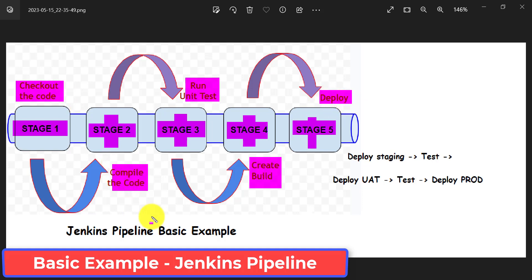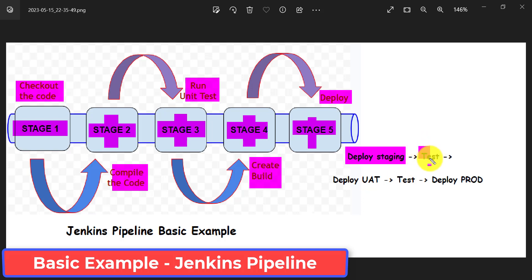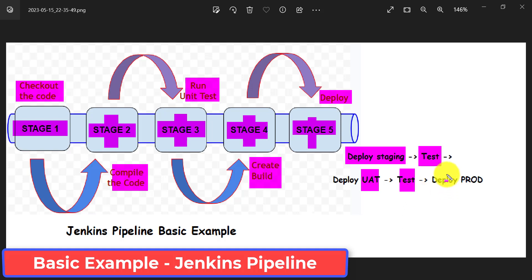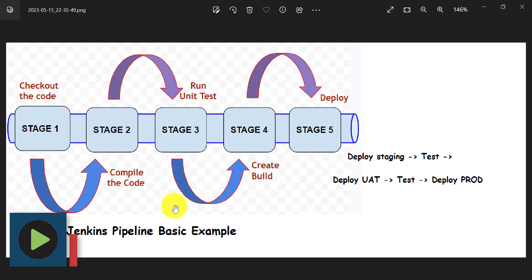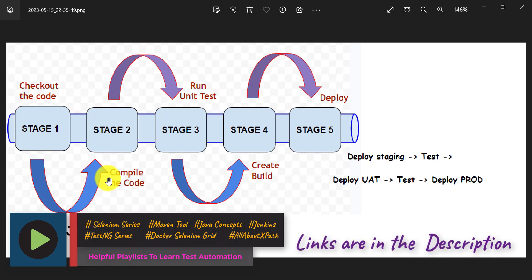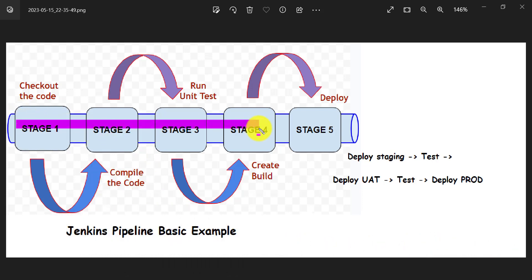I have shown the basic example of the software development process: first we check out the code, then compile, then run unit test cases, then create the build, and then deploy to different environments. After stage five, let's say I deploy to the staging area. Once deployment is successful, I run automation test cases on staging. Once that is done, I deploy to the UAT environment, run automation test cases there, and once successful, I deploy to production.